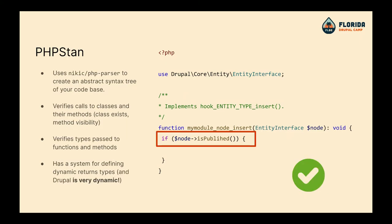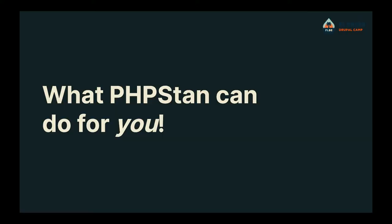PHPStan uses Nikita's PHP Parser Library — a PHP library that creates the abstract syntax tree, so you don't need an extension to run it. It verifies calls to classes and methods that they exist. So it would say 'isPublic is not a method.' It also has a system for defining return types dynamically. We know Drupal might return an array or an integer based on what method you called, but by integrating extensions we fix that.